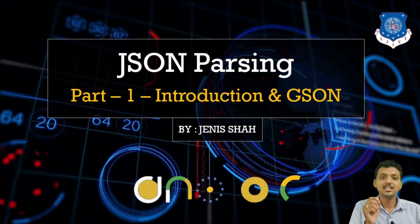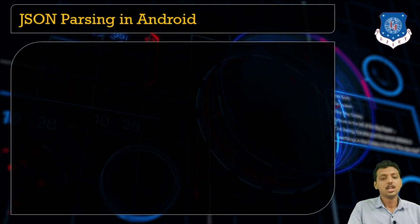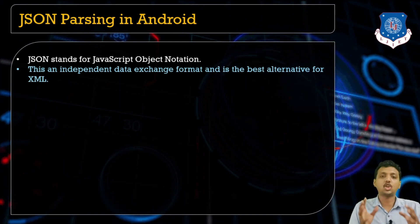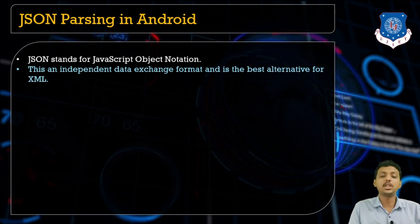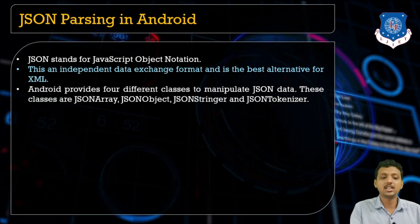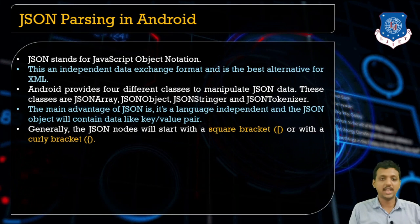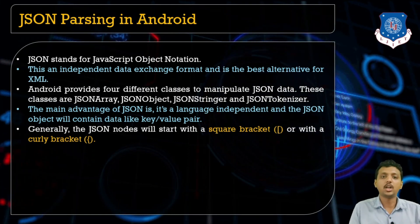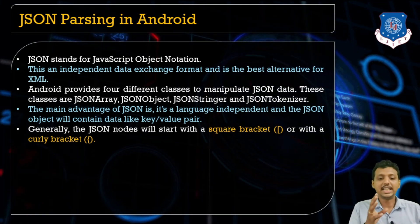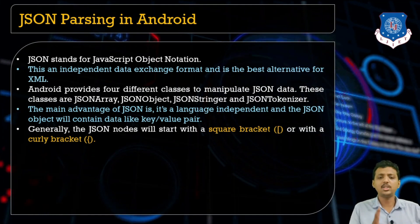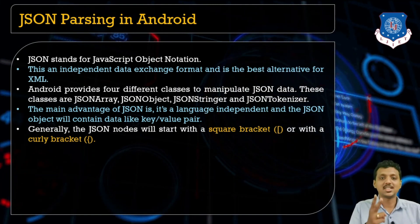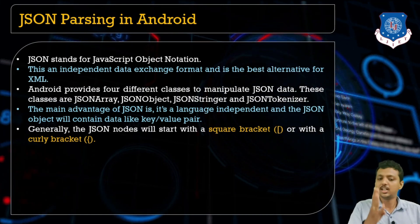JSON stands for JavaScript Object Notation — a common format used for communication during web services. It is an independent data exchange format and the best alternative for XML. Currently in the market, JSON is widely used for communication instead of XML. Android provides four different classes to manipulate JSON data: JSONObject, JSONArray, JSONTokenizer, and JSONStringer.